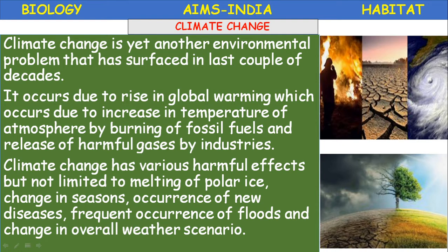Due to global warming and acid rains, there is no specific time for cyclones — anytime cyclones are occurring, even during summer. Carbon dioxide increase leads to rise in temperature, and we see the lush green earth surface converting into desert due to climate changes.